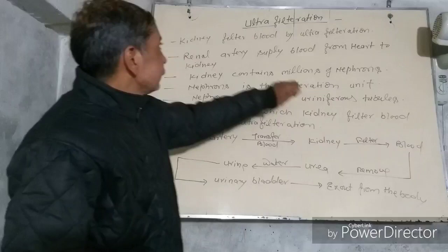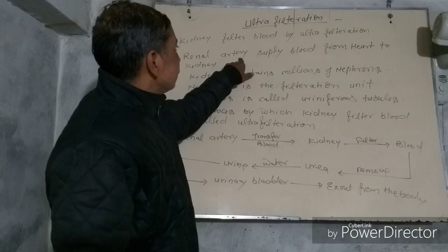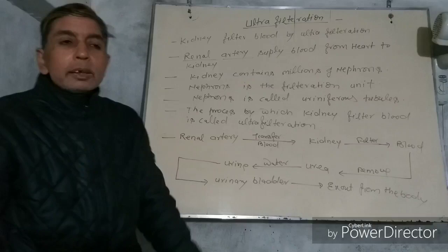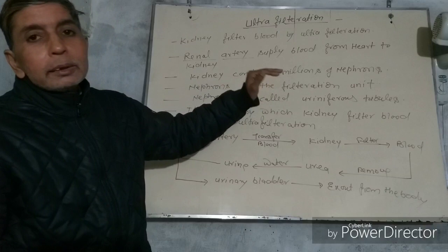The artery which transfers blood to the kidney is called the renal artery. These renal arteries transfer blood to the kidney. And these arteries are divided into different types of small artery branches, called arterioles.